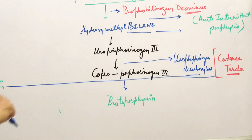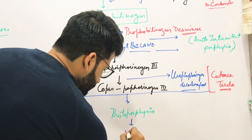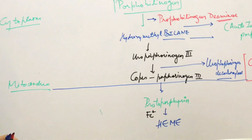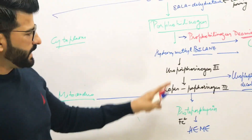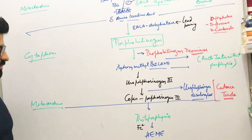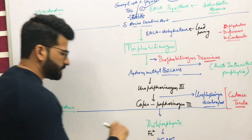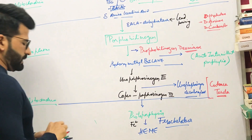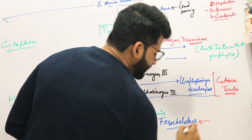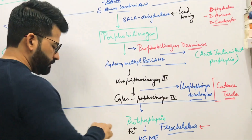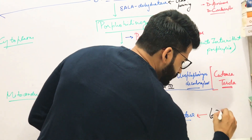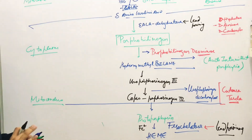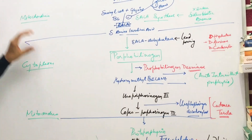Coproporphyrinogen III will now enter the mitochondria to form protoporphyrinogen. Protoporphyrinogen is converted to what we require — that is heme. This is where iron is required in the entire process of heme formation. This is the last step of heme formation in the mitochondria, in the presence of an enzyme called ferrochelatase. Lead poisoning also harms this enzyme.